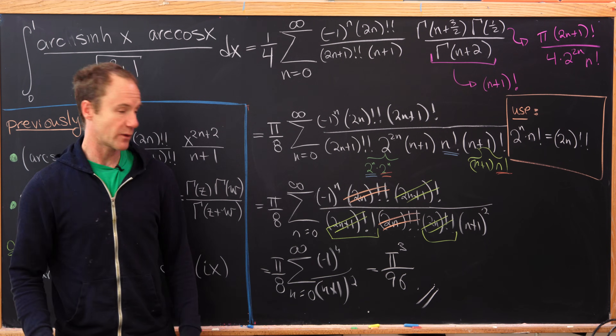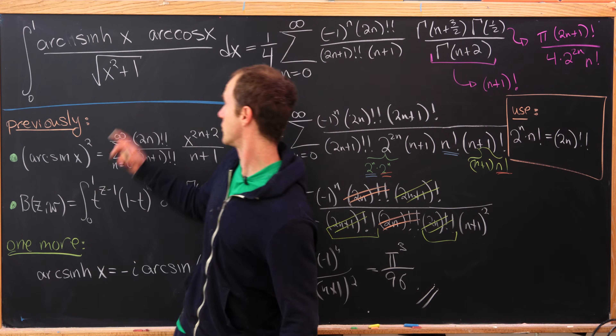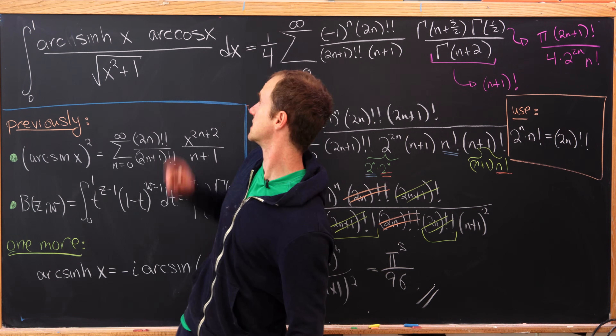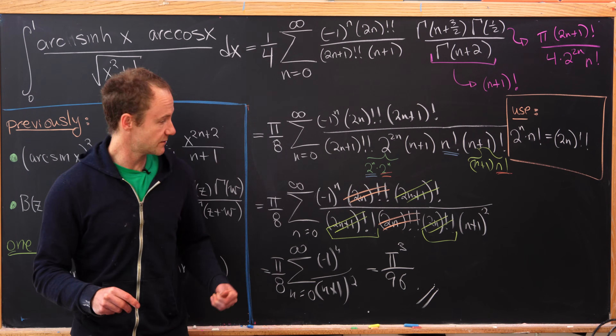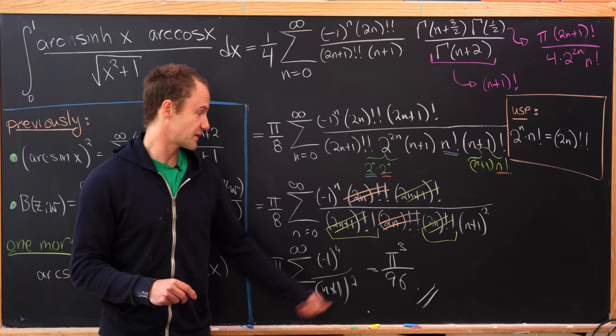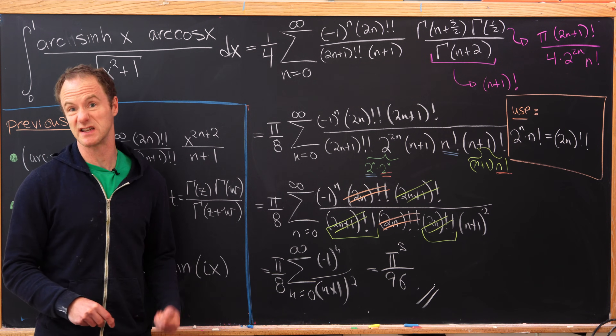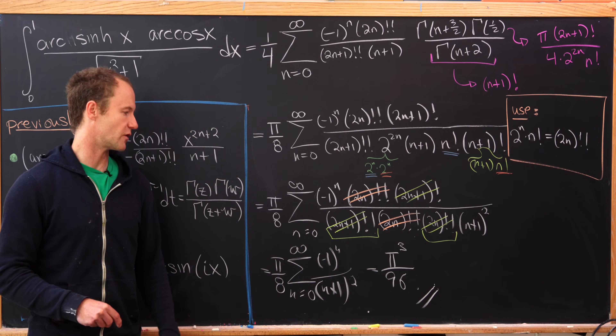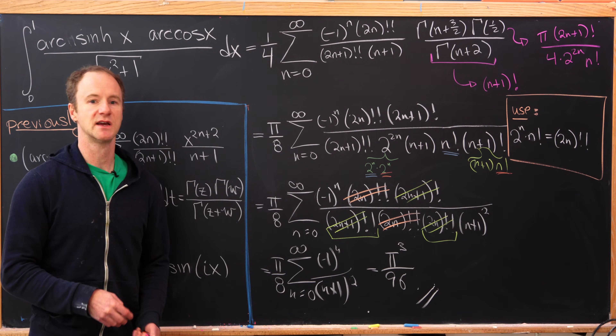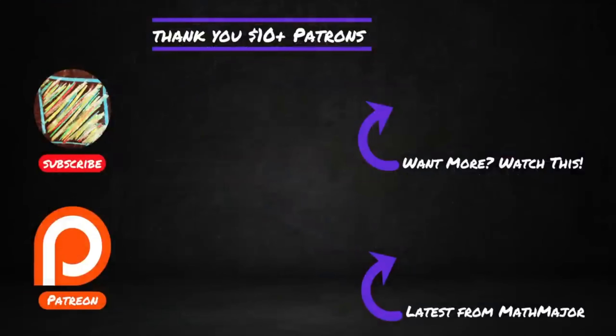Multiplying pi squared over 12 together with pi over 8 gives us pi cubed over 96. The value of our integral comes out to be the nice closed form pi cubed over 96, and that's a good place to stop.